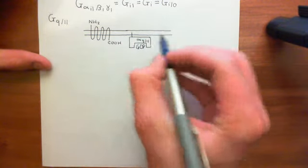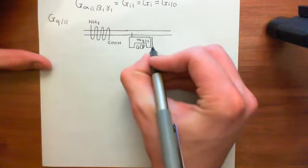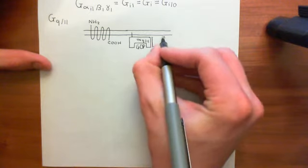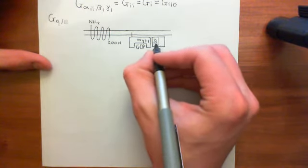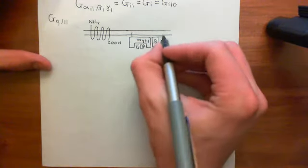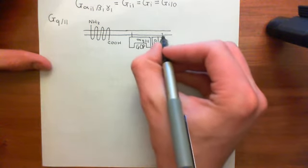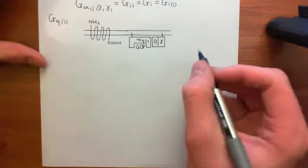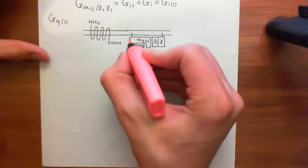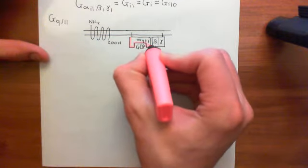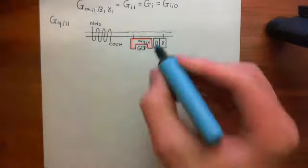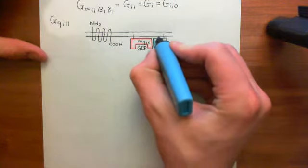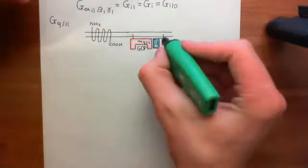The alpha subunit is attached to the beta-gamma complex, which consists of a beta subunit and a gamma subunit. We don't know specifically what the beta or gamma subunit is, so we'll just put beta-gamma. There's also a lipid moiety coming off the gamma subunit. Let's add some color: the alpha subunit in red — remembering this is an alpha-Q/11 family alpha subunit — the beta subunit in blue, and the gamma subunit in green.